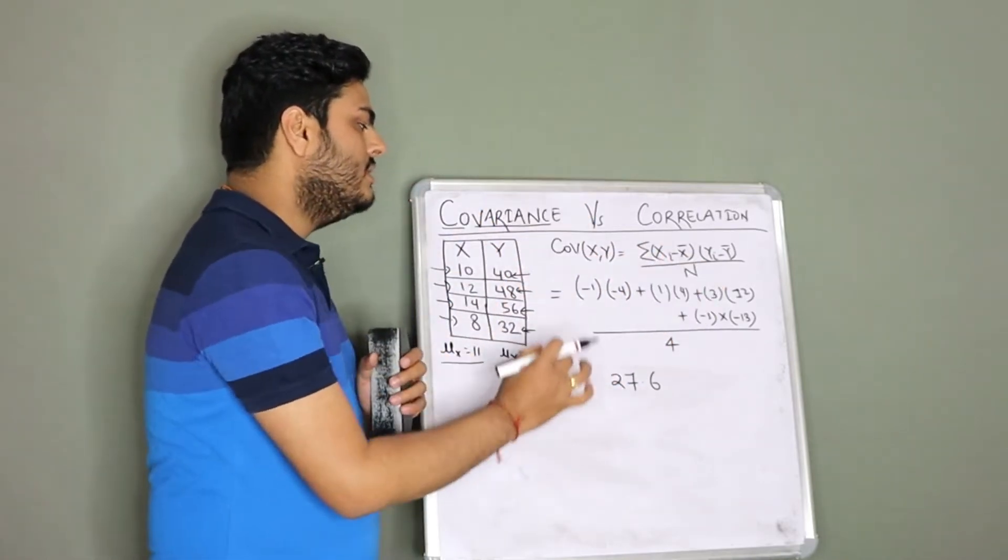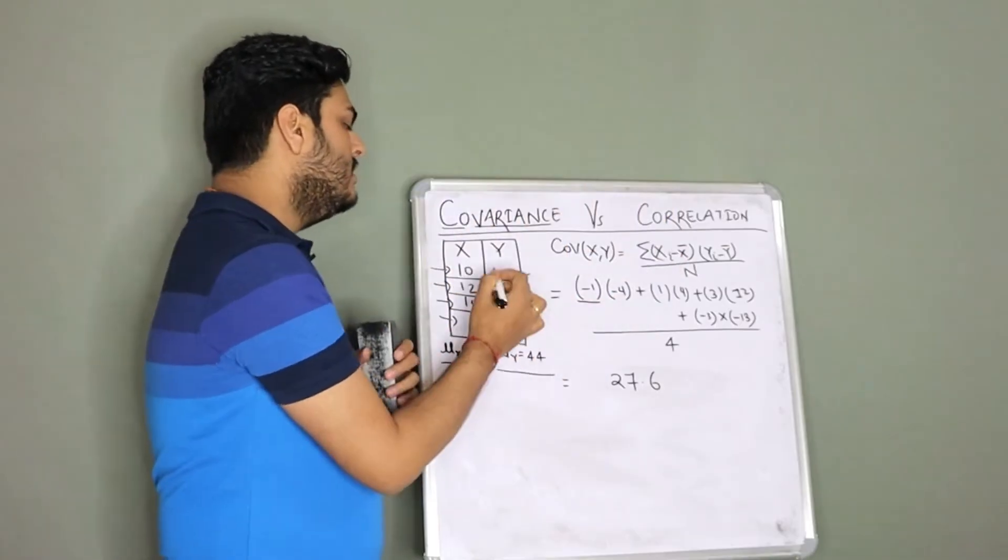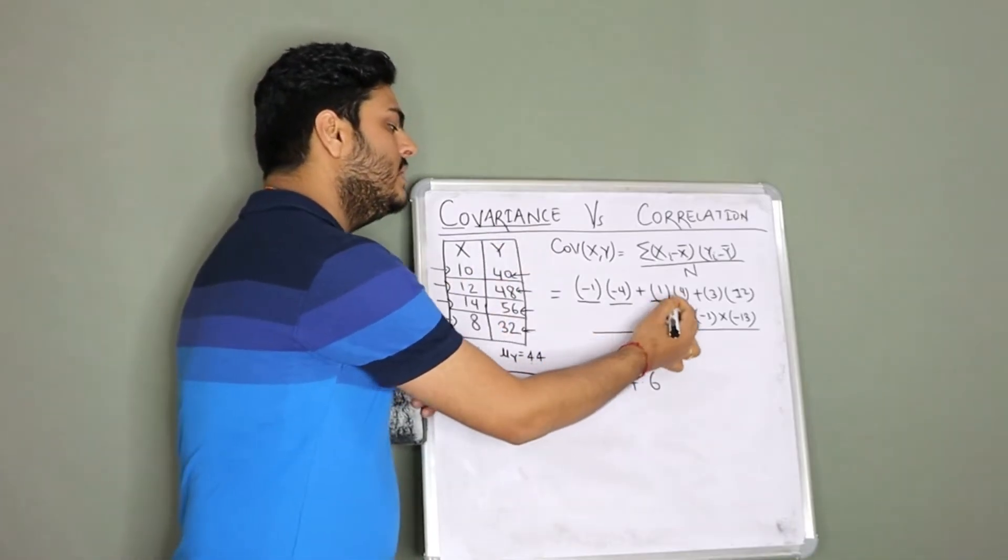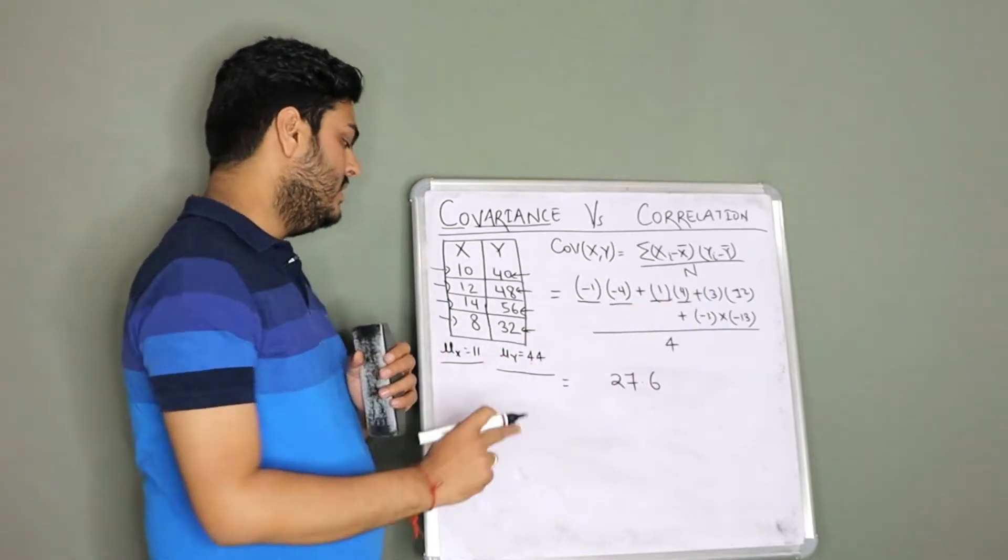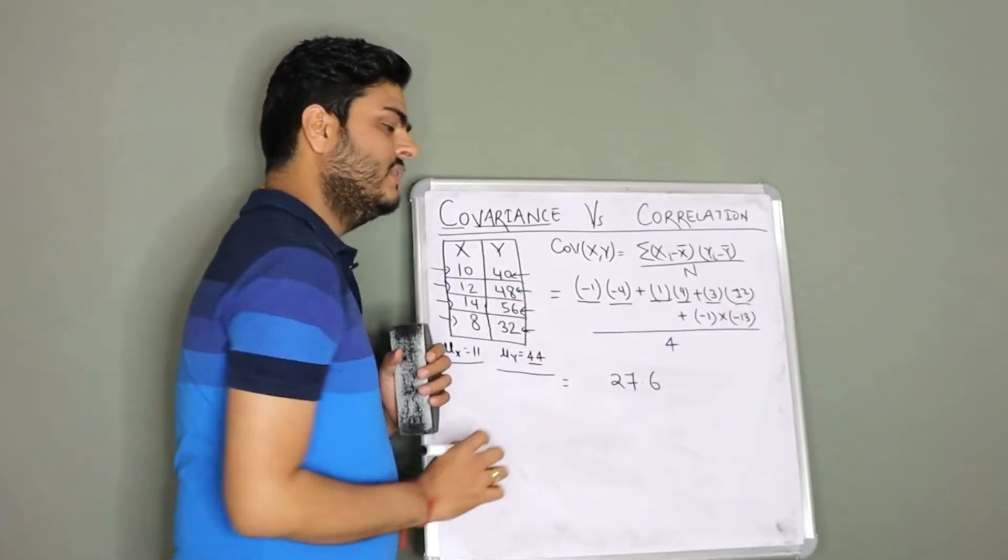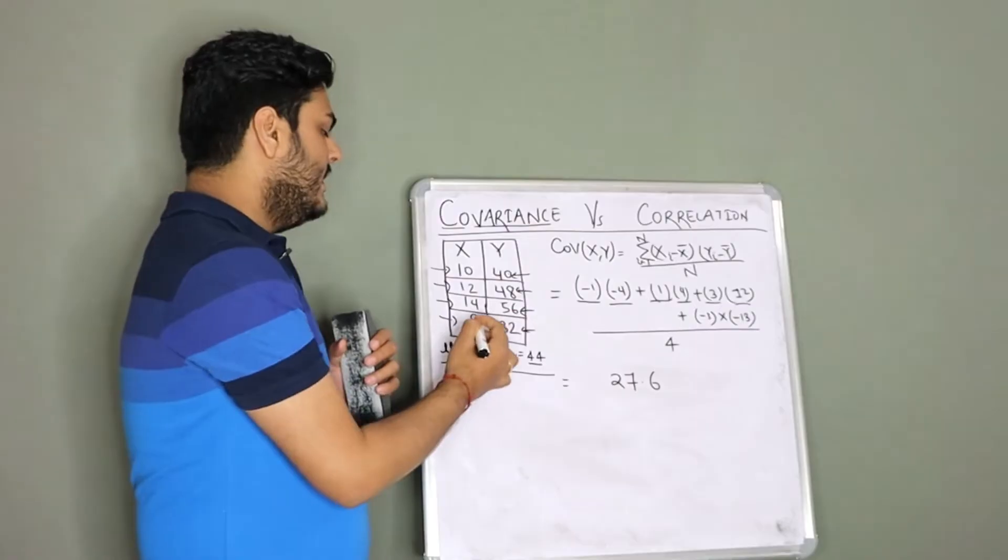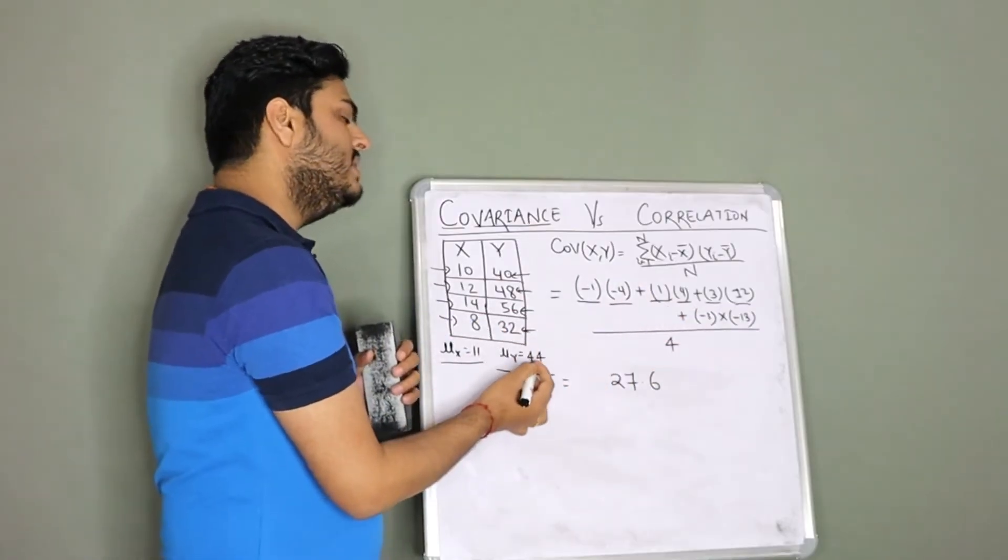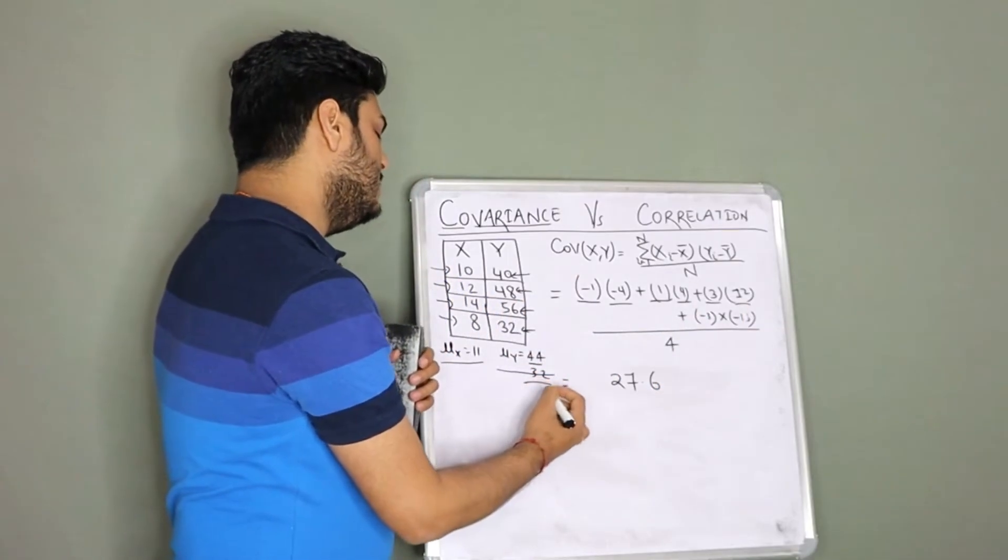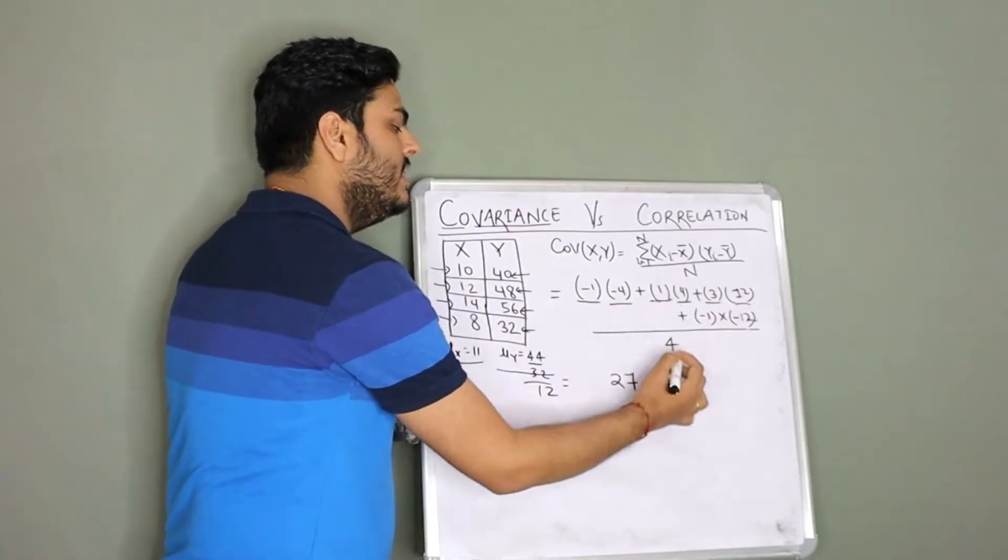First will be, take the difference from the mean, which means 10 minus 11, that is minus 1. Other variable, take the difference from the mean, 40 minus 44, that is minus 4. Next variable, 12 minus 11, how much? 1. 48 minus 44, how much? 4. Next variable, 14 minus 11, how much? 3. 56 minus 44, how much? 12. All these things will be summed up because it is a summation from i equals 1 to n. And 8 minus 11, how much? Minus 3. 32 minus 44, how much? Minus 12.